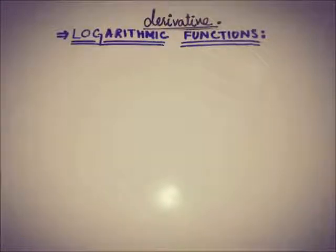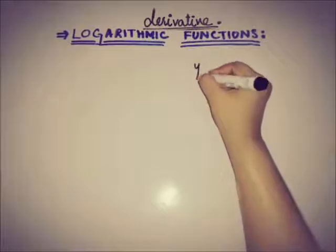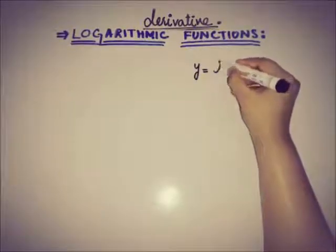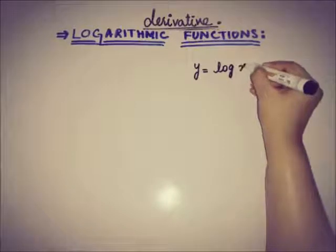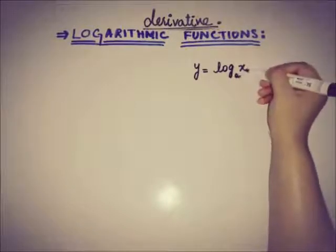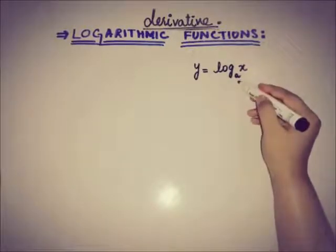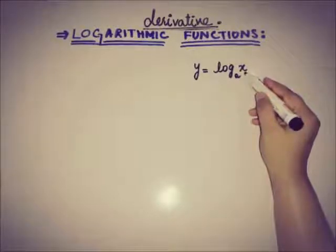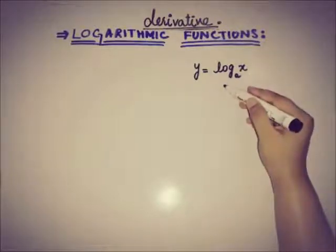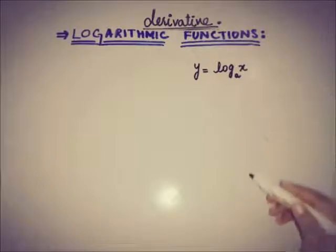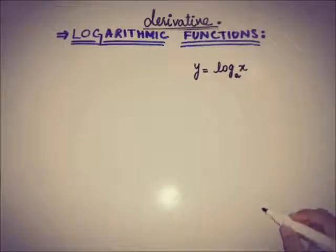In this video we will see how to find the derivative of logarithmic functions. While talking about logarithmic functions, the function that immediately comes to mind is y equals log of x with base a, where a is a constant and x is the independent variable and y is the dependent variable. This is the general form of logarithmic function. Now let's see how to find its derivative.